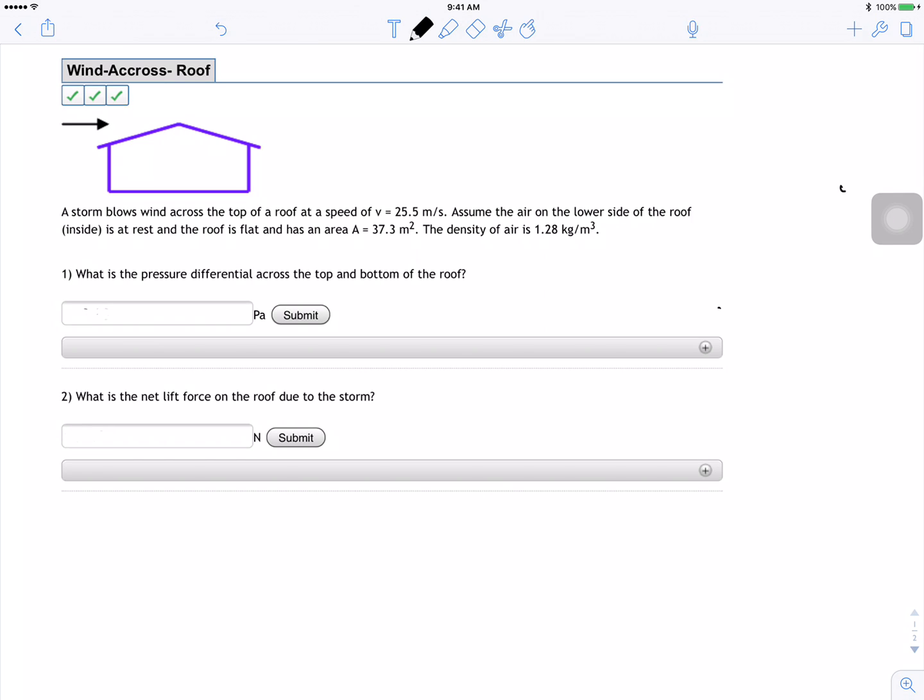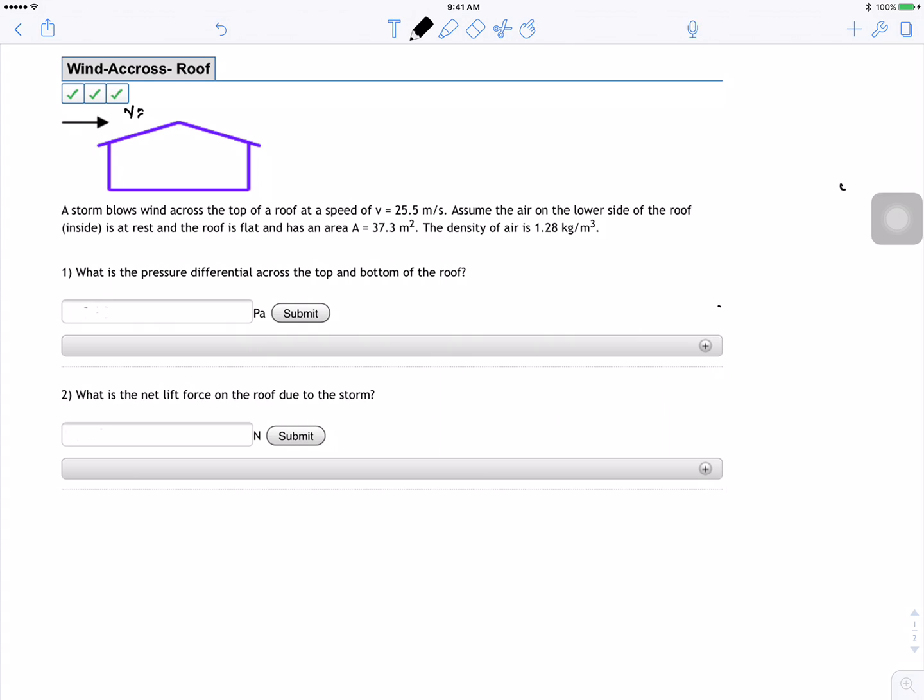What's up guys, this is Waleed and today's problem is the wind across the roof. There's a wind that goes over the roof and it has a velocity of 25.5 meters per second. The area of the roof is 37.3 meters squared and the density of the air is 1.28. So what's the pressure differential across the top and bottom of the roof? They also give us that the wind inside the house is at rest.